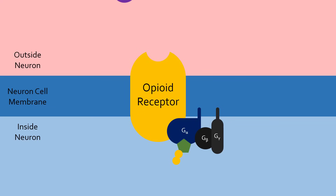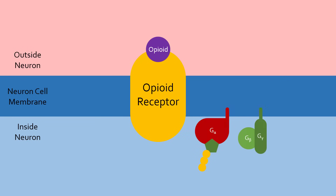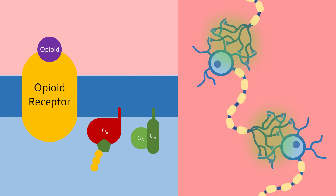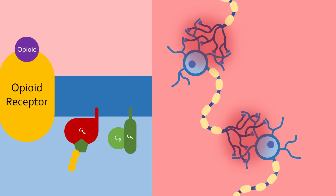Once inside the central nervous system, opioids will bind to opioid receptors found on pain-signaling neurons, causing molecular and cellular changes that prevent these neurons from sending signals to each other, therefore stopping a person's sensation of pain. How does this signal shutdown occur?